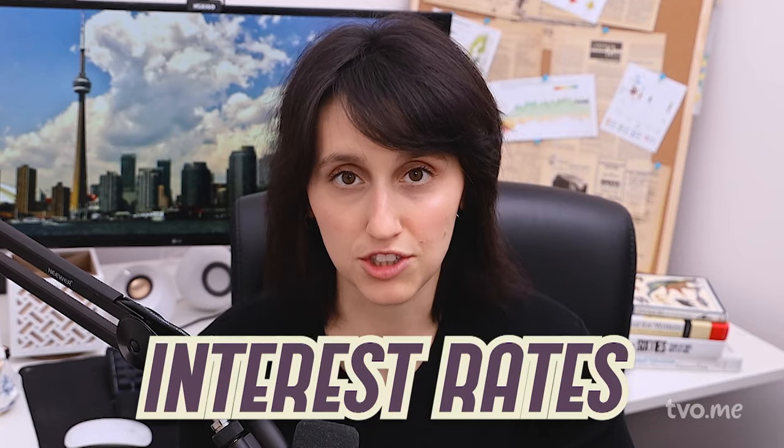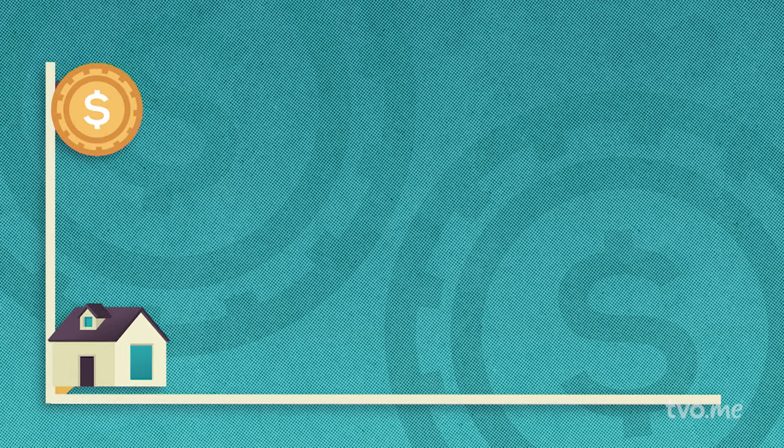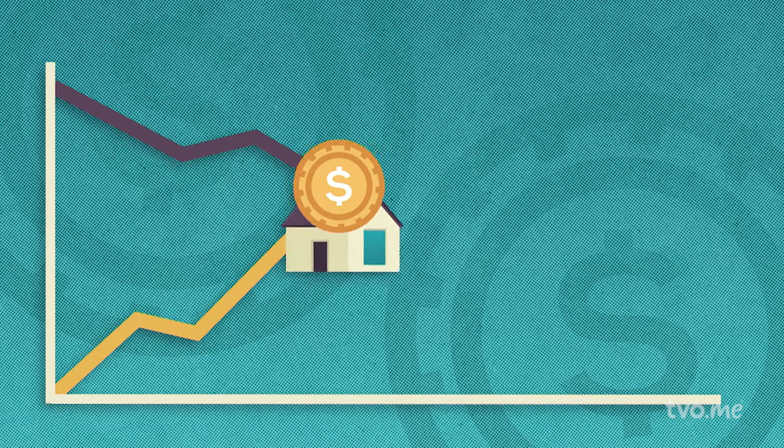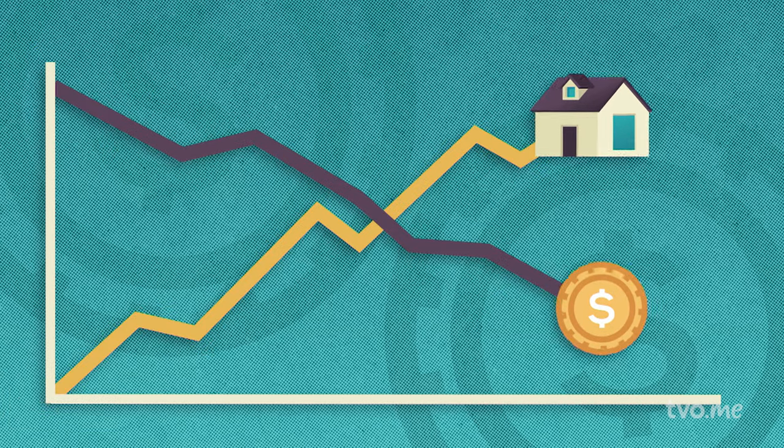The next factor is interest rates. If interest rates are low, housing bubbles often get even bigger. Low rates mean people can afford bigger mortgages, further driving up demand and prices. Buyers may take out riskier loans without heeding warning signs like increasing interest rates or a shrinking economy.